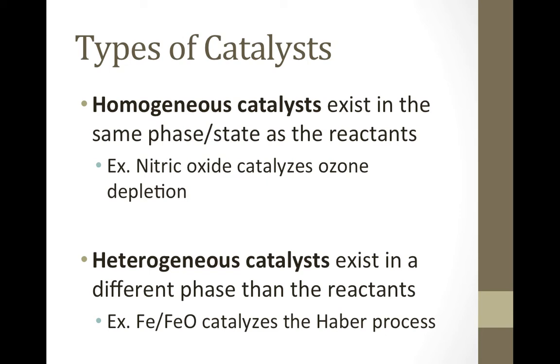In the commercial production of ammonia, for example, the Haber process, it uses an iron and iron oxide solid catalyst to speed up the reaction between the gaseous hydrogen and oxygen.